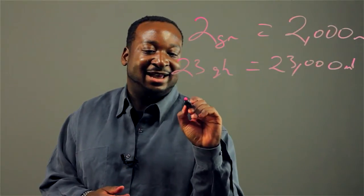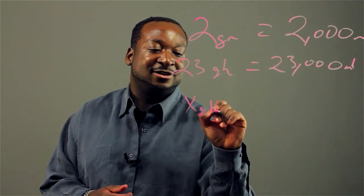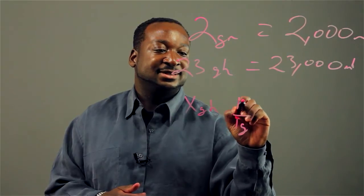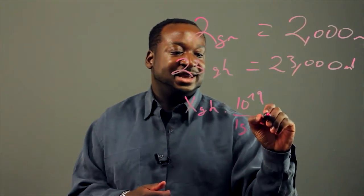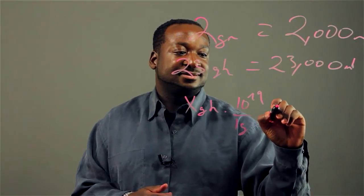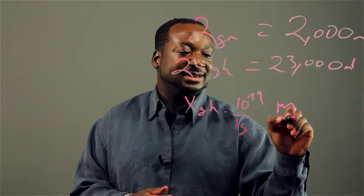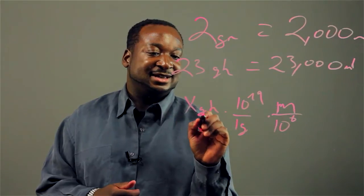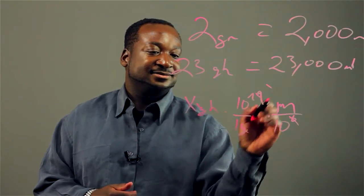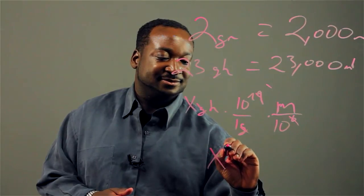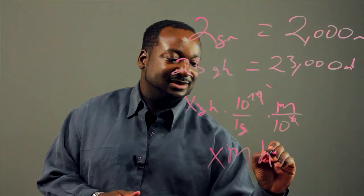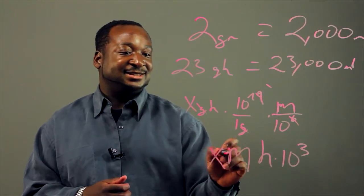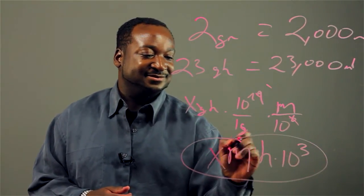And here's why. Let's say you have X gigahertz. One giga equals 10 to the ninth, and one mega equals 10 to the sixth. When we do the cancellation, you get X times 10 cubed. So basically, it's the same thing — just multiplying by a thousand. That's why.